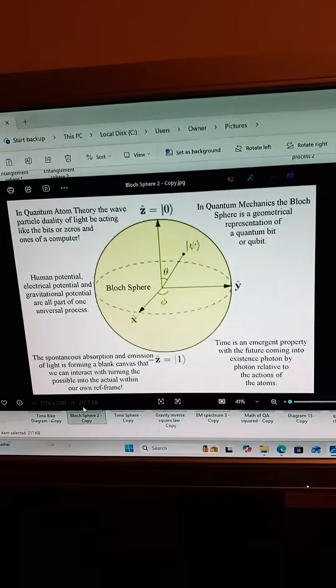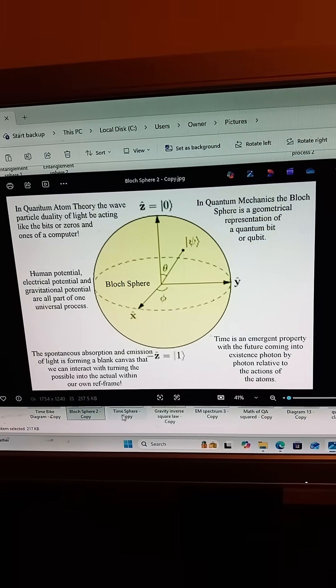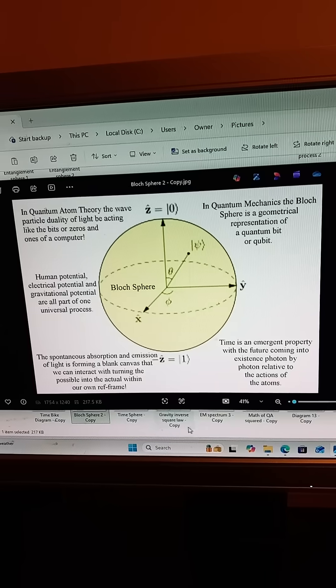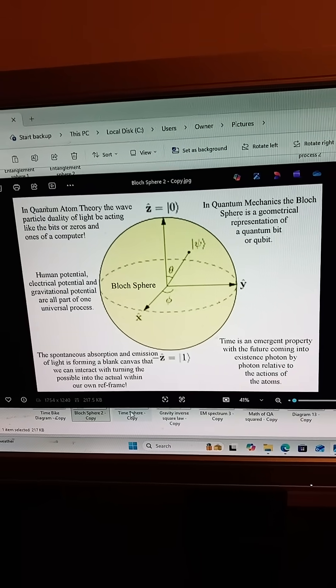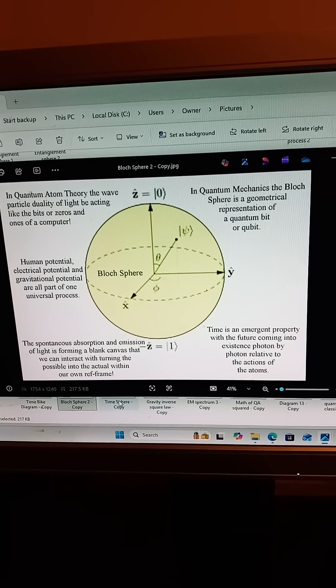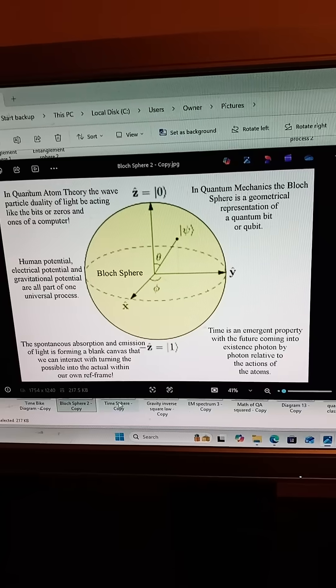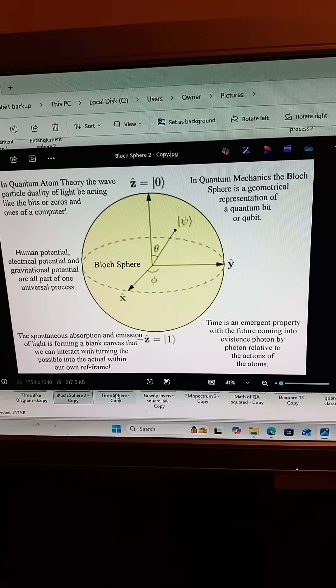A qubit is not just information, it is geometry. A point on the surface of the sphere represents a fully coherent quantum state, defined by both probability and phase. Photon polarization and electron spin share this same spherical geometry.